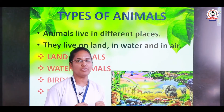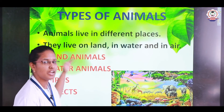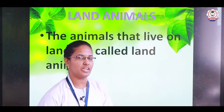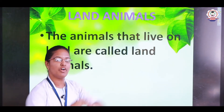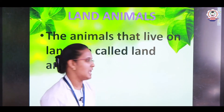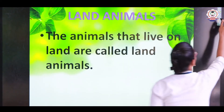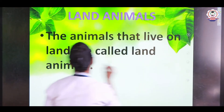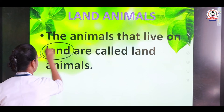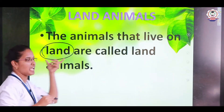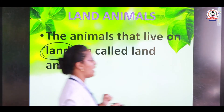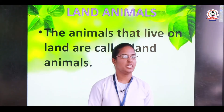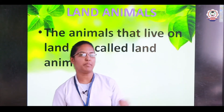Today we are going to see about the first two types — land animals and water animals. What do we mean by land animals children? The animals that live on land are called land animals. Now I am going to give you some examples of land animals.